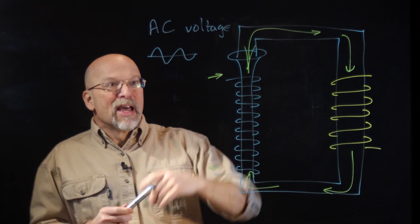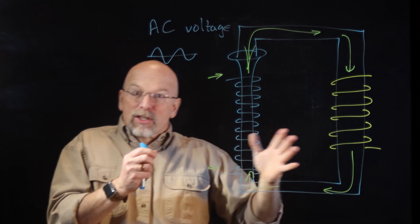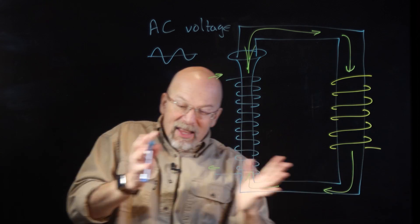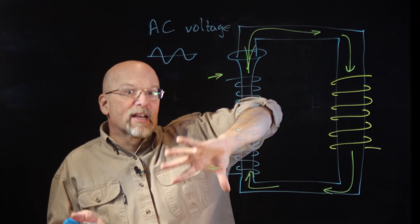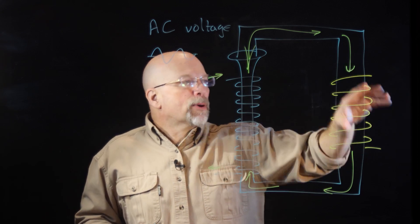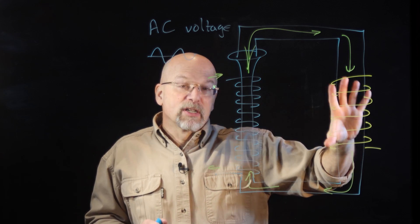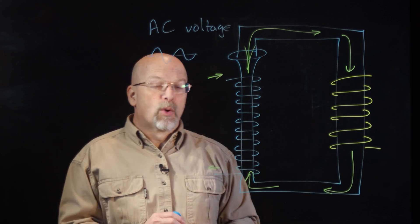Well, this sine wave is the current flowing in one direction and then in the other direction, in one direction and the other direction. And having that electromagnetic field then flowing back and forth will produce an alternating current of the same frequency in that coil.